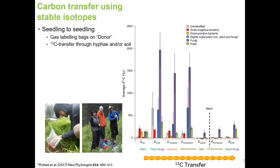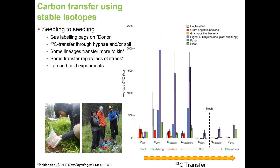We're finding elevated ¹³C — photosynthesized by the donor — in different tissue types including plant tissue, fungal tissue, other eukaryotes, and both gram-positive and gram-negative bacteria. What you can see is that most of the transferred ¹³C is passing through fungal biomass in these different components of the system, all the way through into our receiver plant on the right-hand side.